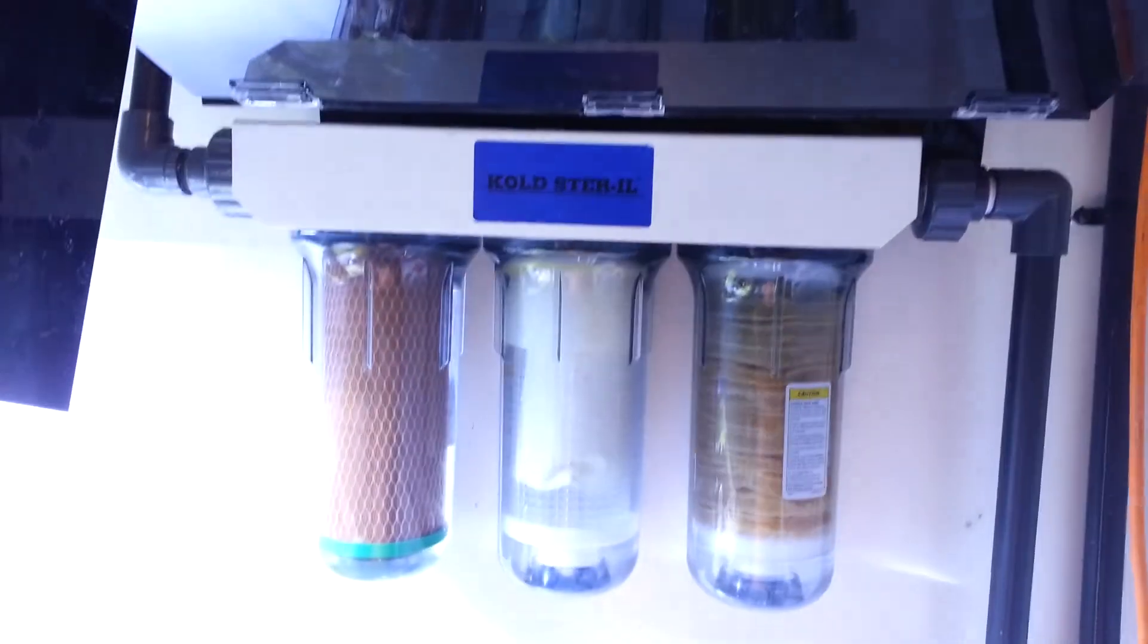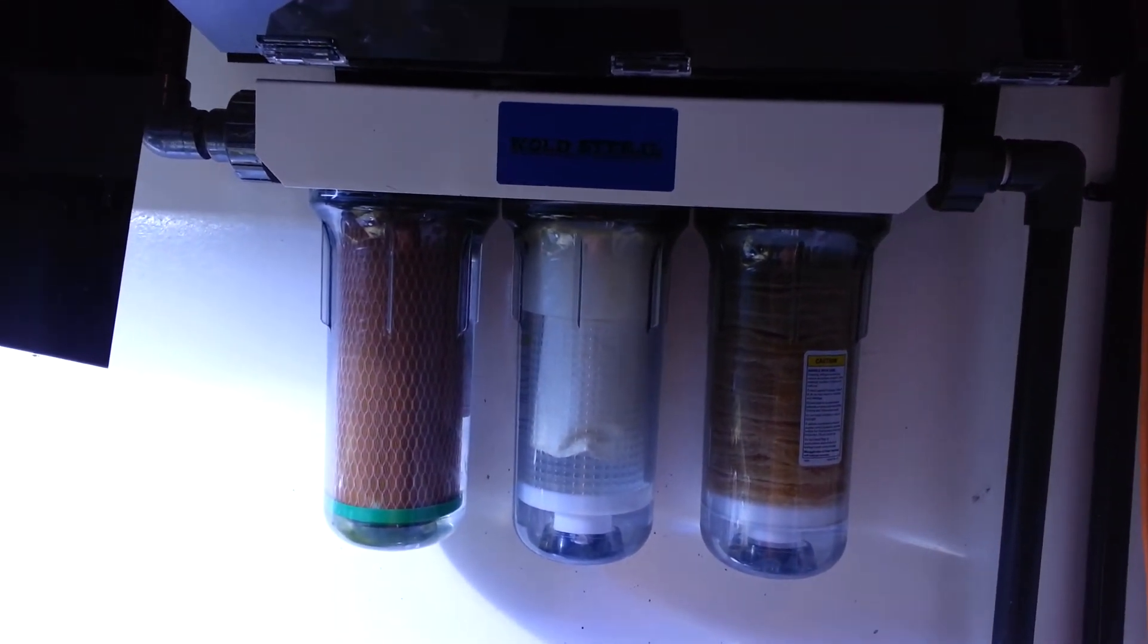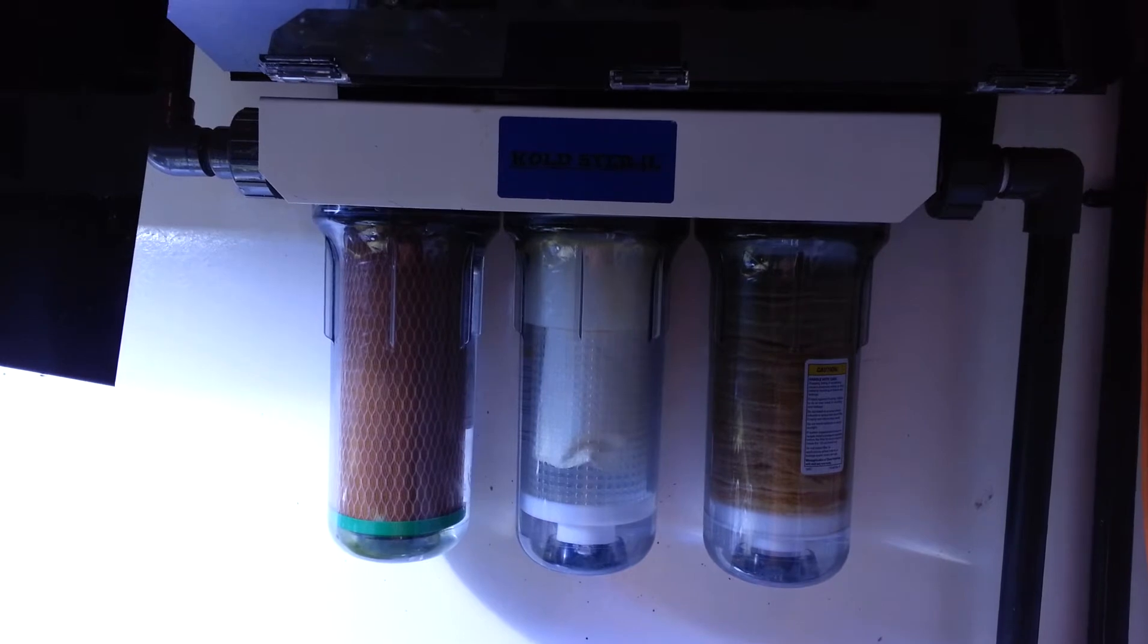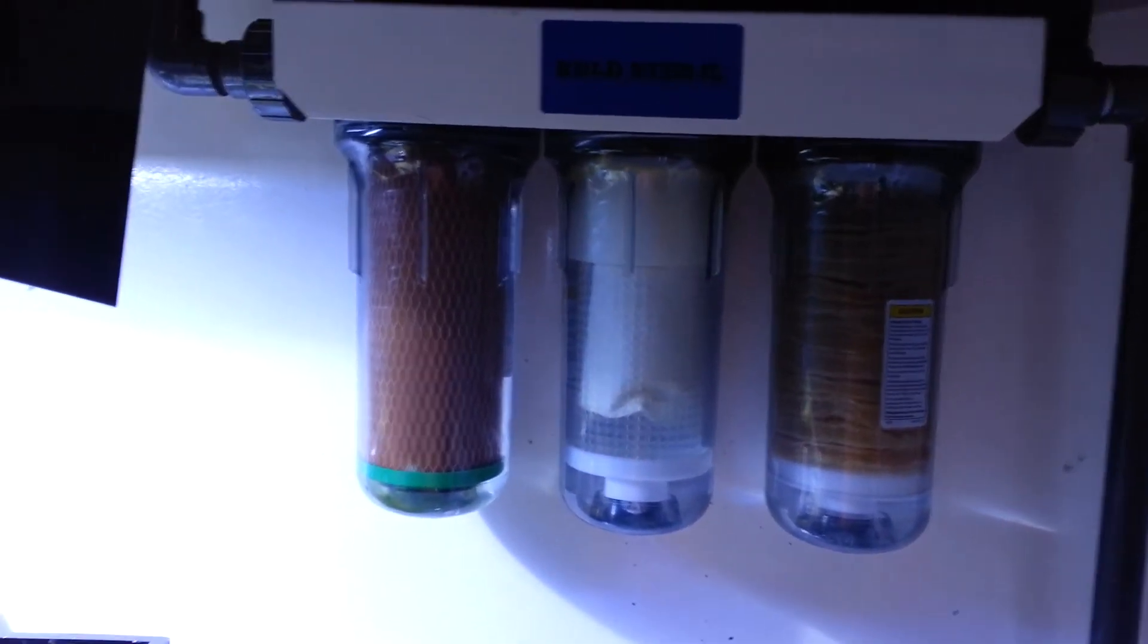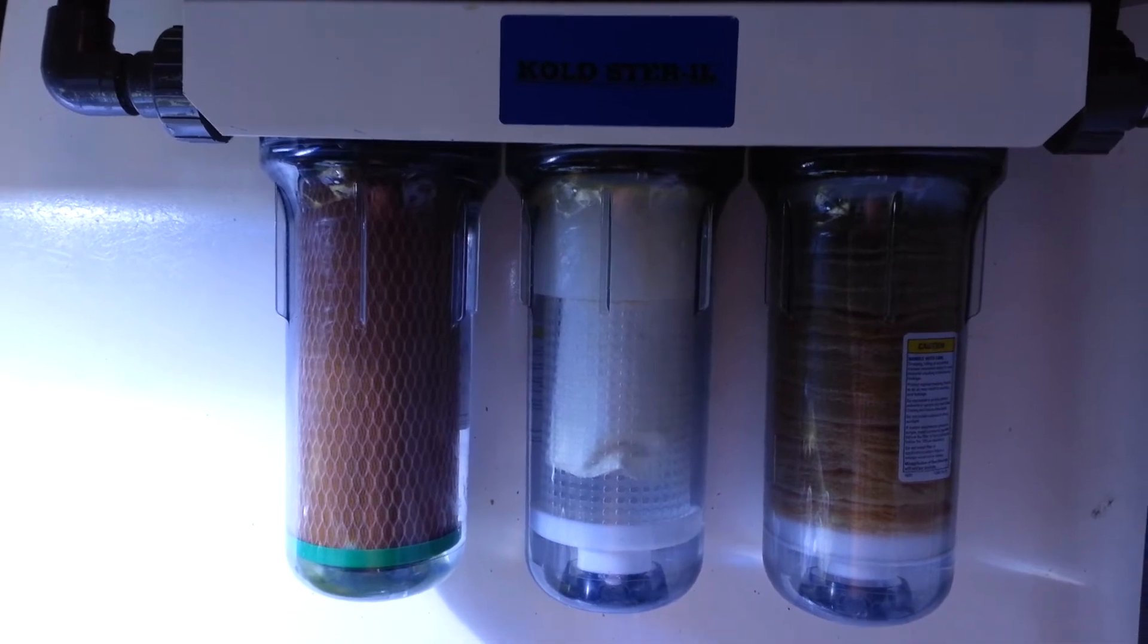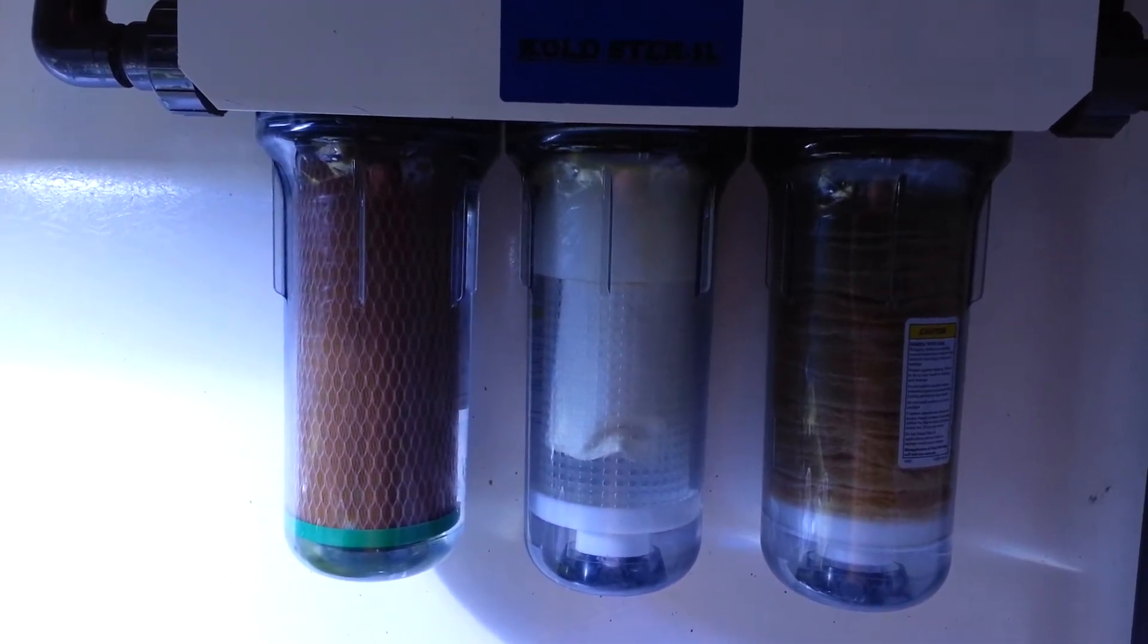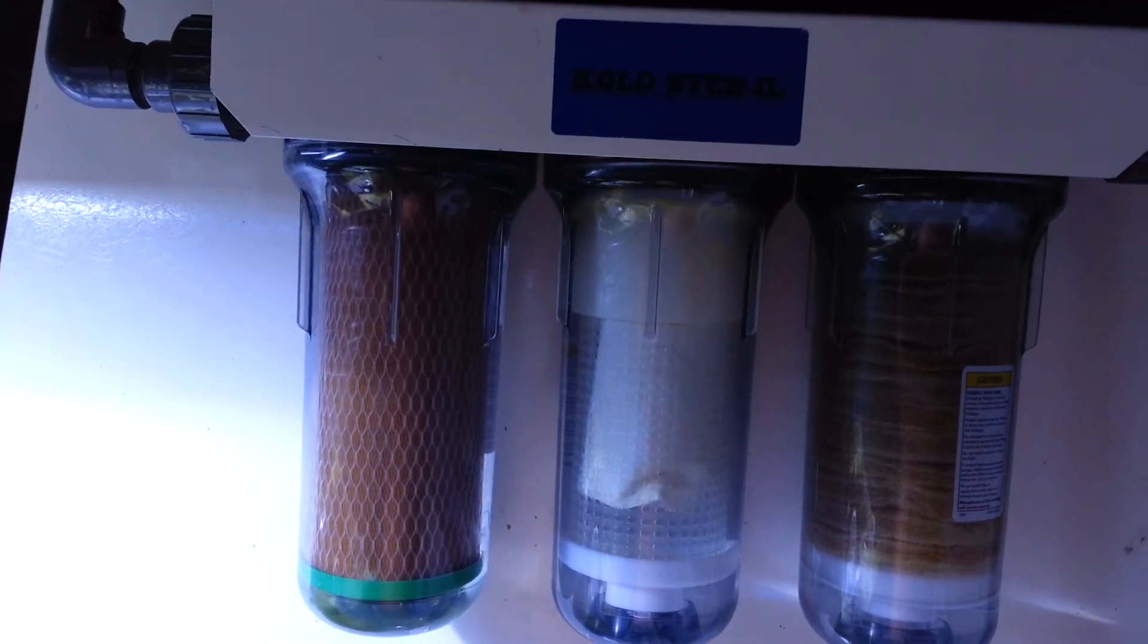And then a cold sewer filter system, which I need to change the media in there. So it's a three stage - you can tell the large ones from right to left here. It catches the larger particulates, and then the middle, and then the left for finer particles.